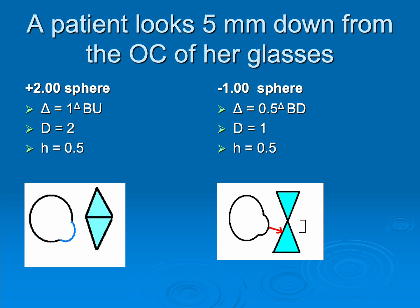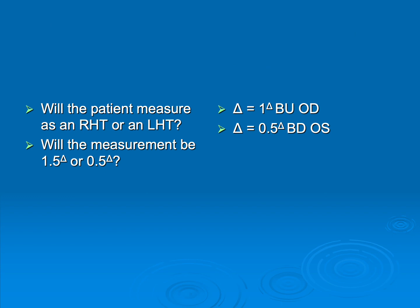Now, here's the big question. How do we put these two things together? In other words, will the patient measure as a right or a left hyper? And will that measurement be 1.5 or 0.5? Because here's what we're getting: one prism diopter base up over the right, one half base down over the left.